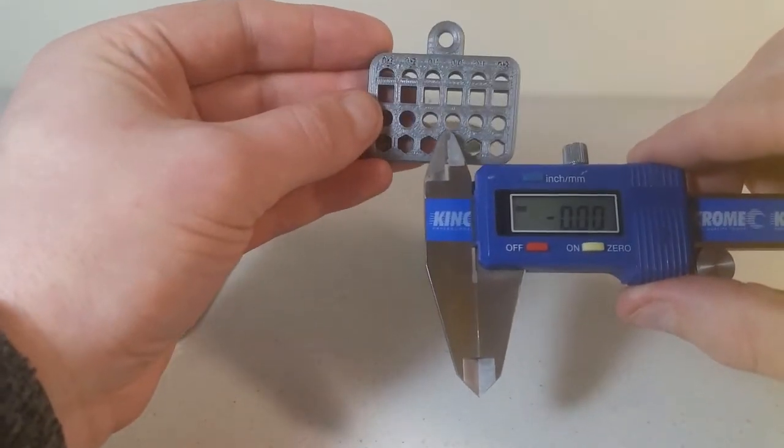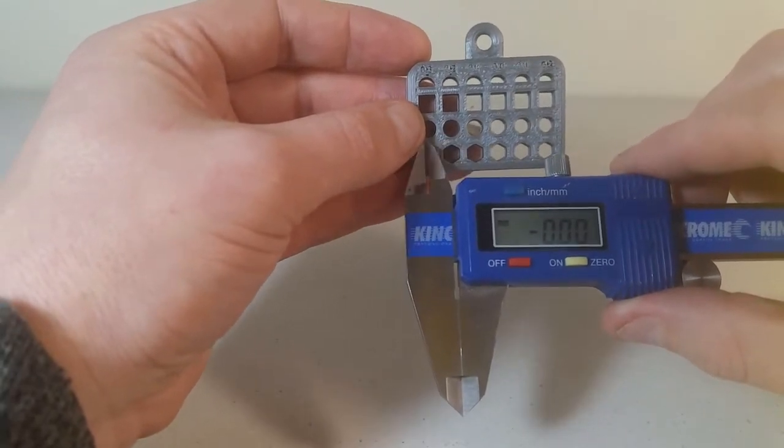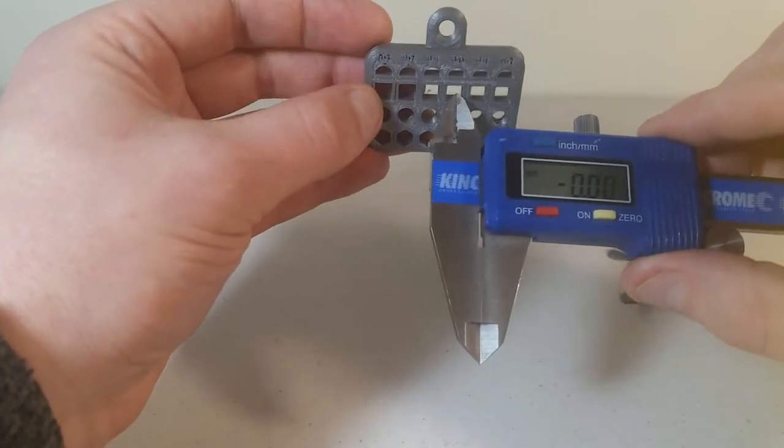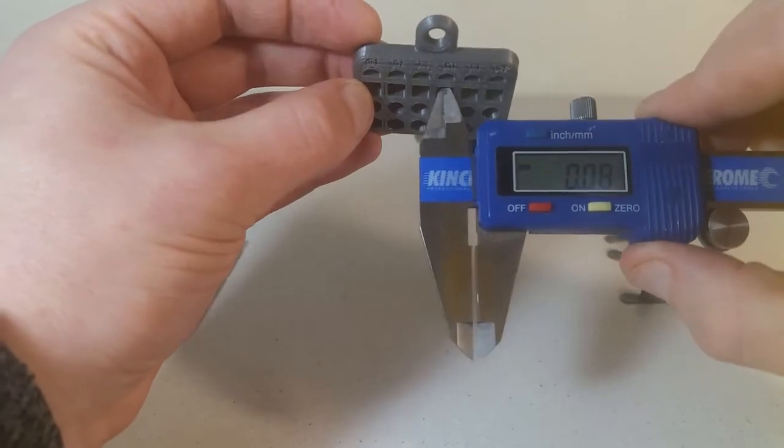Now if we look at the object printed itself, the holes start from 5 millimeters to 5.1 to 5.2 to 5.3, so let's see how that actually turned out.